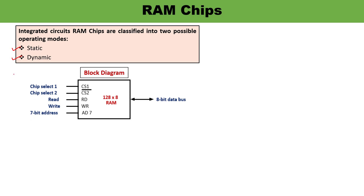Now let us draw the block diagram of the RAM chip. RAM chips are available in a variety of sizes and can be used as per the system requirement. Here you can see a 128x8 RAM, which means it has a memory capacity of 128 words and each word is of 8 bits, meaning 1 byte. When talking about the address lines, 128 equals 2 raised to the power 7, so it requires 7 address lines. This means 7 address bits, and at the same time an 8-bit data bus.